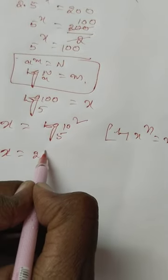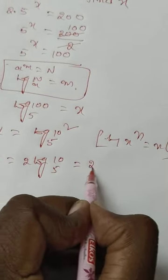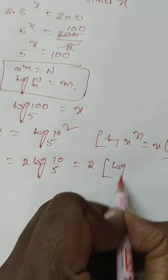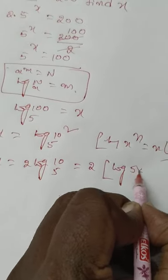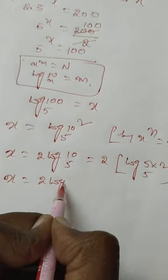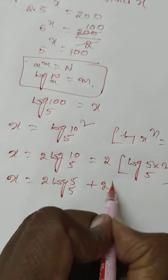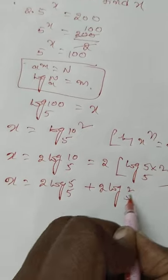x is equal to 2 log 10 base 5. That is equal to 2 of log 10, rewrite that as 5 into 2 base 5. So again x is equal to 2 log 5 base 5 plus 2 log 2 base 5.